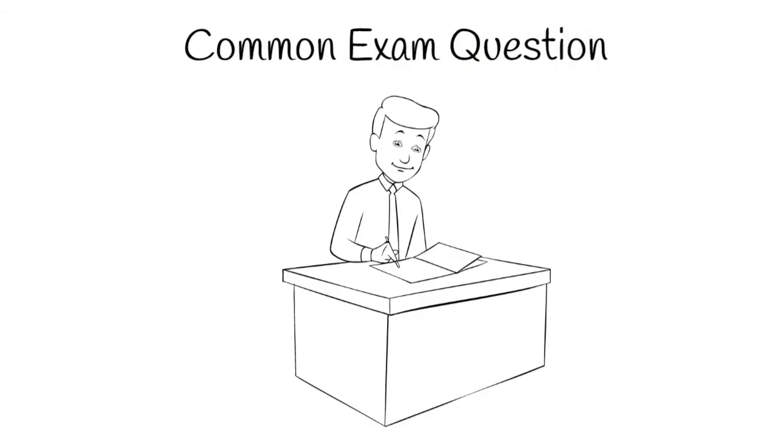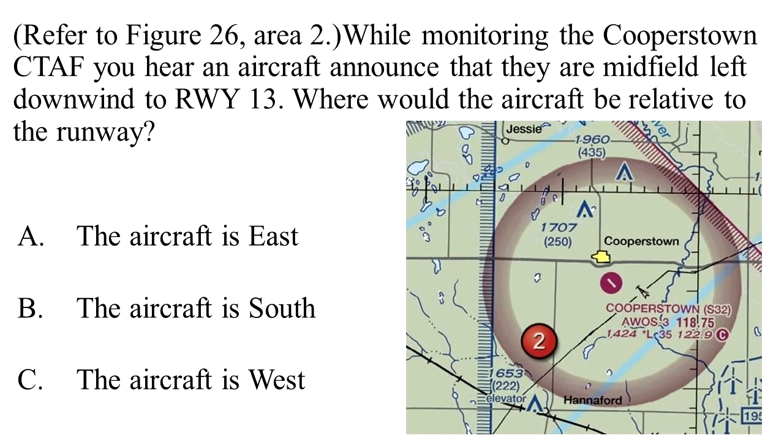Here is a common FAA exam question. While monitoring Cooperstown's CTAF, you hear an aircraft announce that they are midfield, left downwind, runway 13.